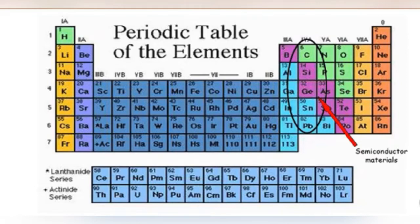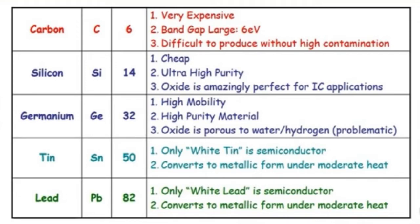We need to study in detail which semiconductor materials can be used for electronic applications and which cannot. In this table we have five elements: carbon, silicon, germanium, tin, and lead. For carbon, the band gap is very large at 6 electron volts. Silicon is very cheap and can be made high purity. Germanium has high mobility and high purity. For tin, only white tin is a semiconductor, and for lead, only white lead is a semiconductor.